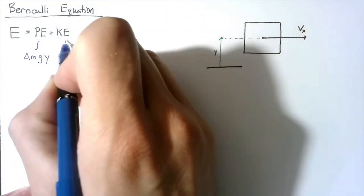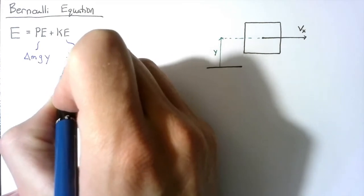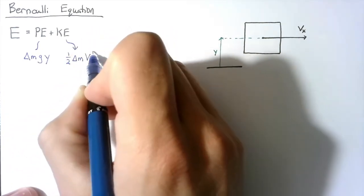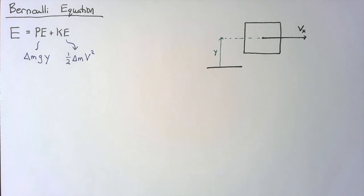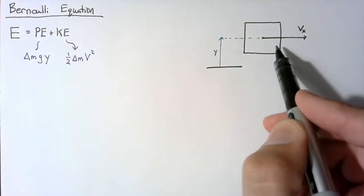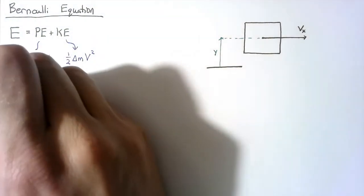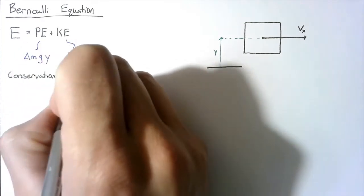The kinetic energy here is going to be the standard one-half times the mass times the velocity squared. This is how we're defining our energy for this fluid element. What we need to do next is look at the conservation of energy equation.